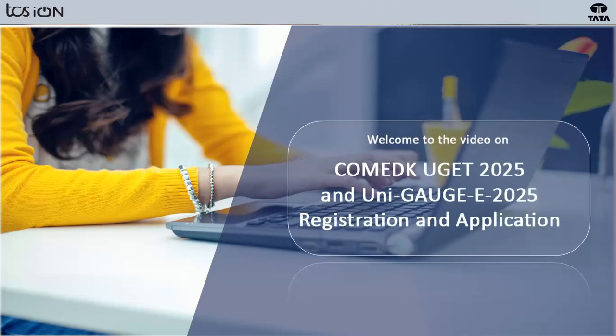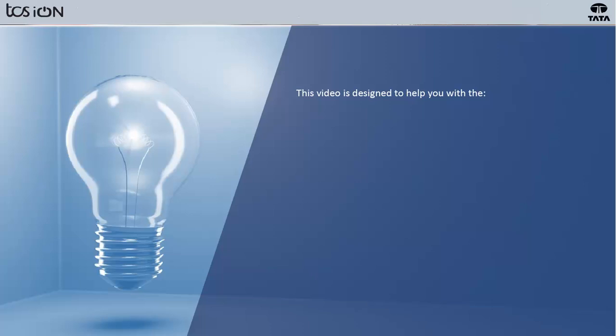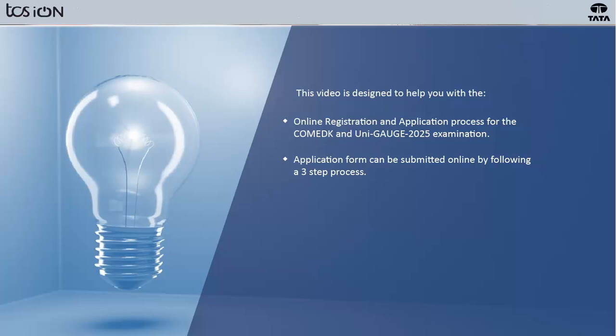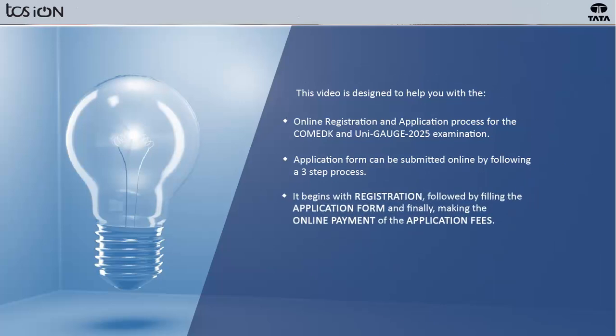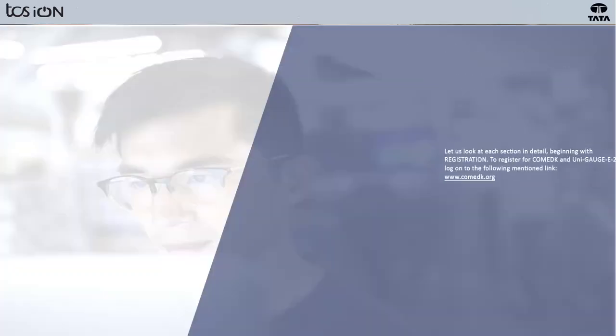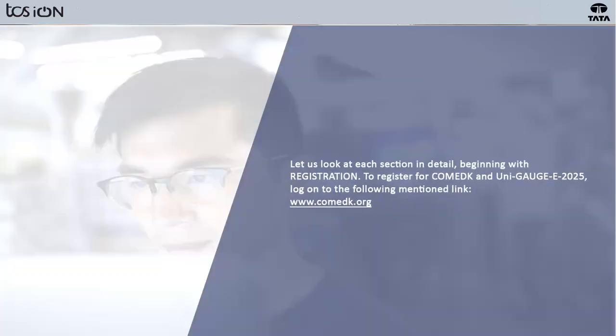Hello and welcome to the COMED-K UGET 2025 and UNIGAGE E 2025 Registration and Application Video. This video is designed to help you with the Online Registration and Application Process for the COMED-K and UNIGAGE 2025 Examination. The application form can be submitted online by following a three-step process: registration, followed by filling the application form, and finally making the online payment of the application fees. Let us look at each section in detail, beginning with registration.